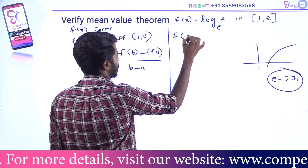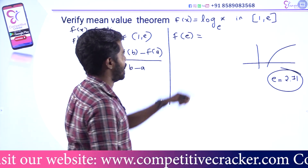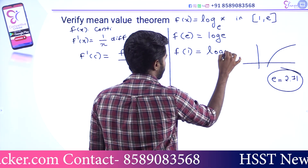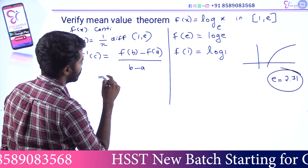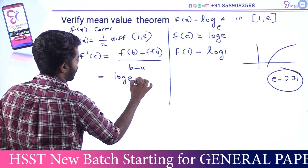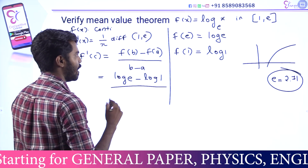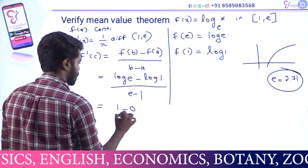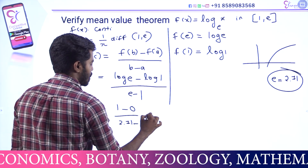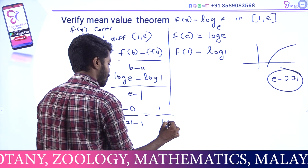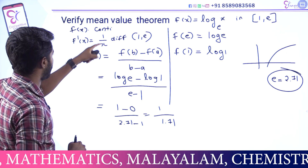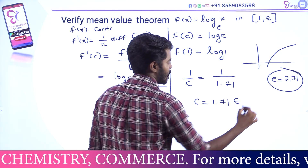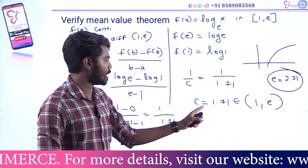F of E is log E, and F of 1 is log 1. So the formula gives log E minus log 1 divided by E minus 1. That equals 1 divided by E minus 1. Therefore F' of C equals 1 by C, giving C equal to E minus 1, approximately 1.71. C equals 1.71, which lies in the open interval (1, E). Thus the Mean Value Theorem is verified.